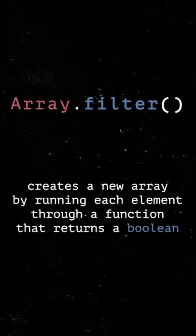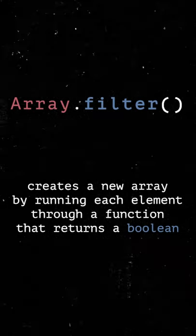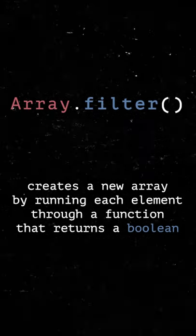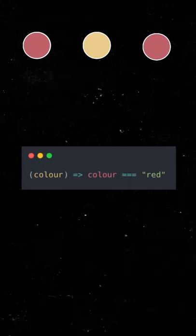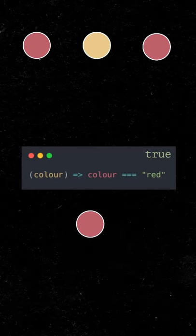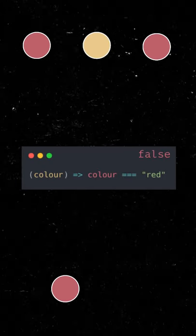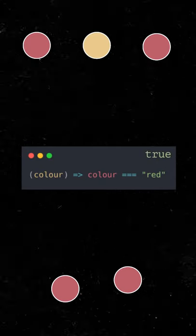Array.filter creates a new array by running each element through a function that returns a boolean. So let's say we wanted to filter an array of colors to only the red ones. We can use filter and pass in a function that returns true when the color is red.